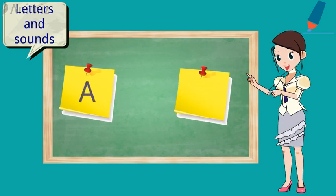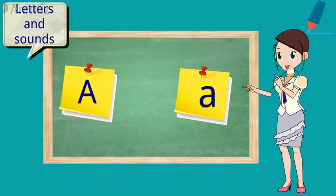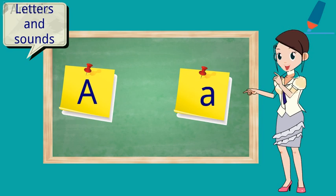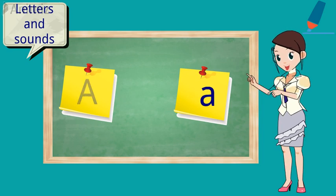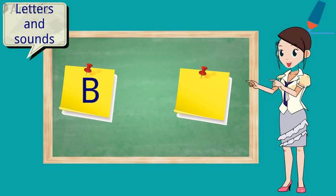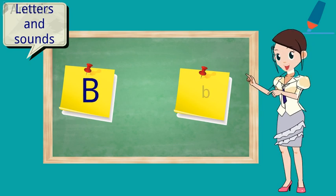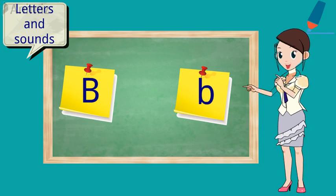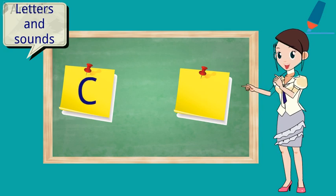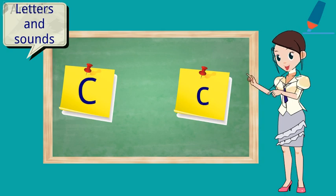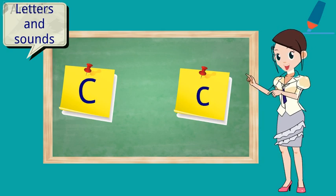The A says A. Every letter makes a sound. The B says B. Every letter makes a sound. The B says B. The C says Kh. Every letter makes a sound. The C says Kh.